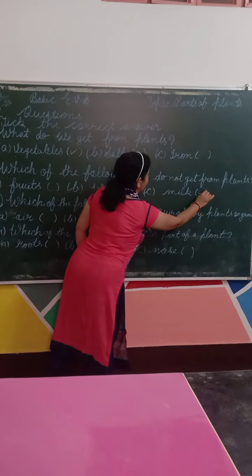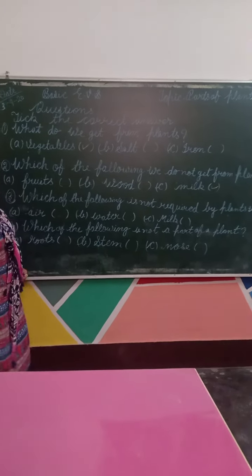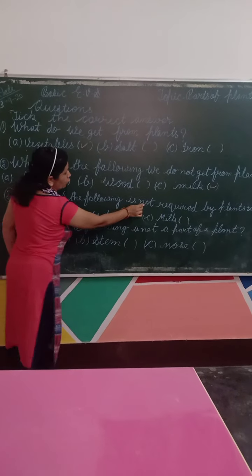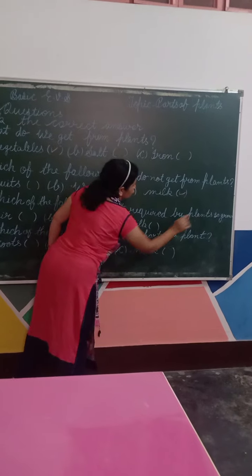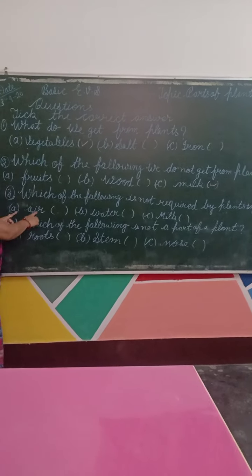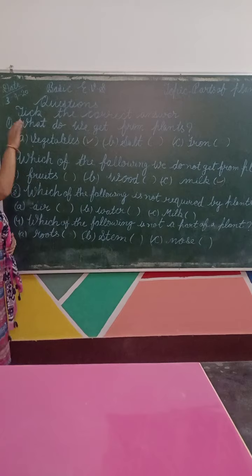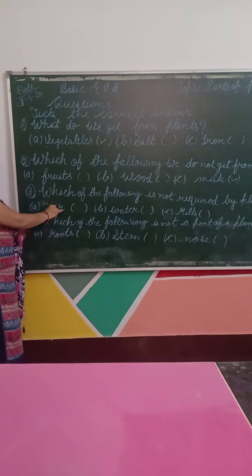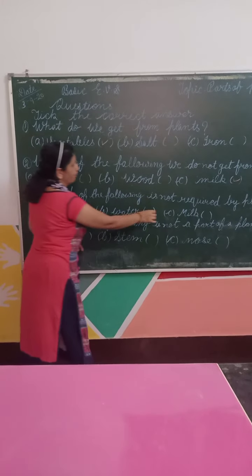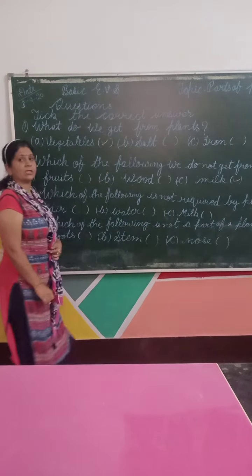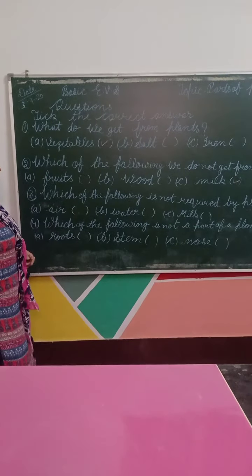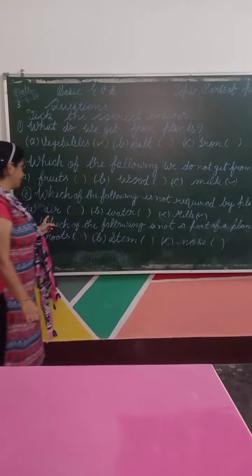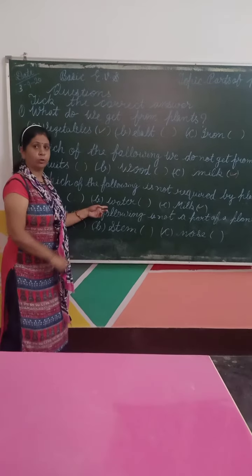Next, Number 3: Which of the following is not required by a plant to grow? Think about three options: Air, Water, Milk. The answer is Milk. Very good.